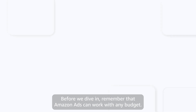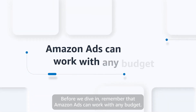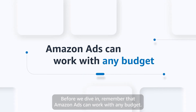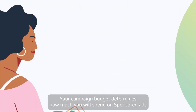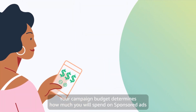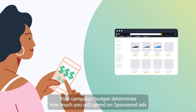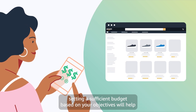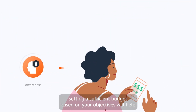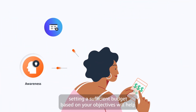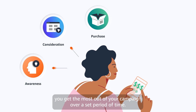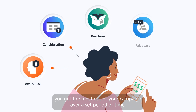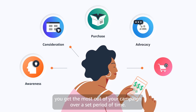Before we dive in, remember that Amazon Ads can work with any budget. Your campaign budget determines how much you will spend on sponsored ads. Setting a sufficient budget based on your objectives will help you get the most out of your campaign over a set period of time.